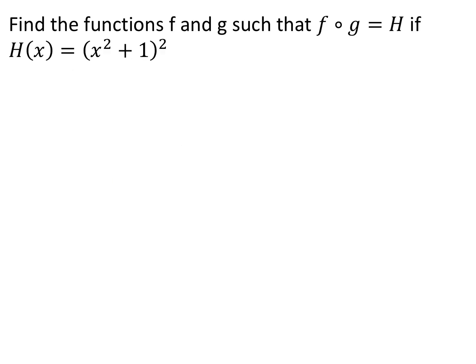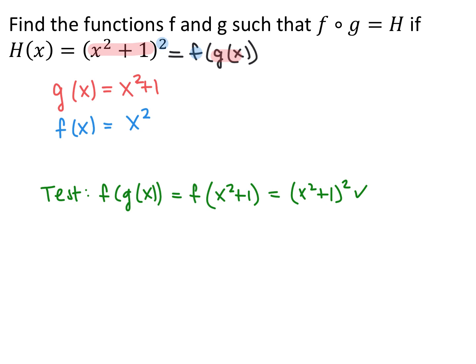Now we have a composite function: f composed with g is h of x, which equals the quantity x squared plus 1, squared. We want to find the two functions f and g that compose to give this. I look for one function inside another. The inside function is x squared plus 1, and the outside is squaring it. So g of x equals x squared plus 1 and f of x equals x squared. Testing the composite confirms we get the original function back.